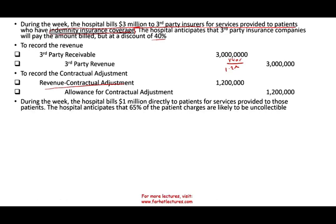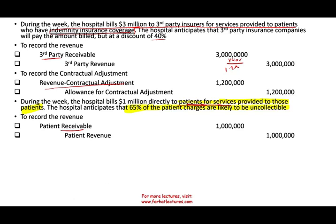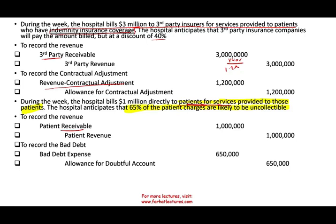Next example: the hospital bills $1 million directly to patients — no insurance involved. The hospital anticipates 65% of patient charges are likely uncollectable, which is typical in a hospital setting. Journal entry: debit patient receivable $1 million, credit patient revenue $1 million. Then record bad debt expense: debit bad debt expense $650,000, credit allowance for doubtful accounts $650,000.